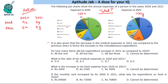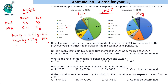The condition says: decrease in medical expenses equals thrice the increase in miscellaneous expenditure. Medical expense decreases by (9x − 6y), and miscellaneous increases by (6y − 6x). So: 9x − 6y = 3(6y − 6x). Simplifying gives 27x = 24y, so x/y = 8/9. The ratio of total expenses in 2020 to 2021 is 8:9.